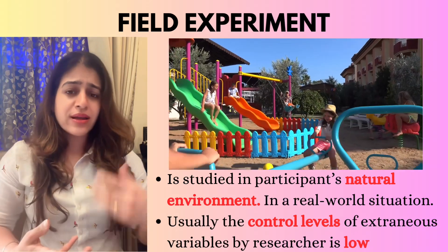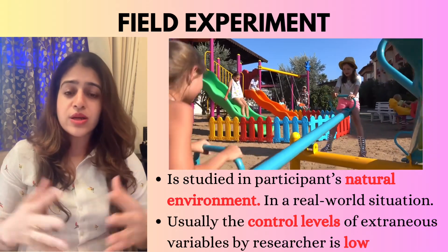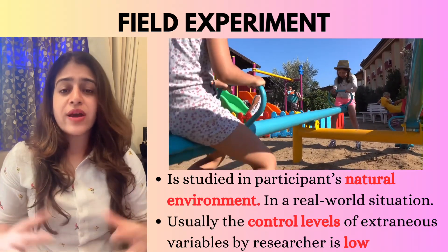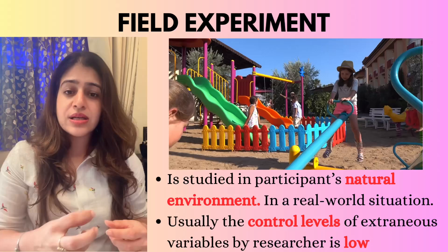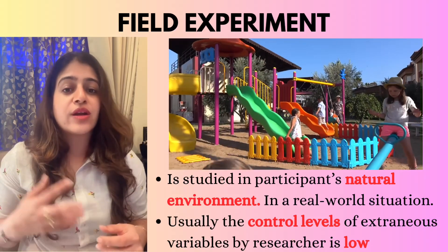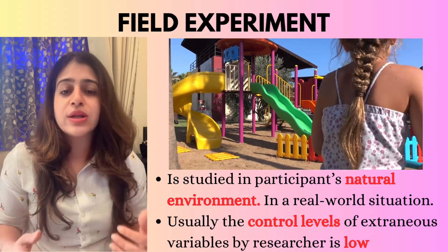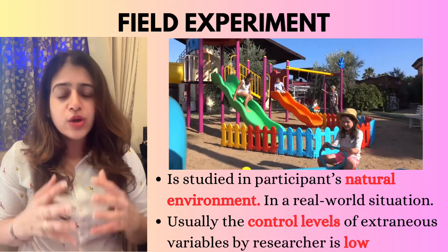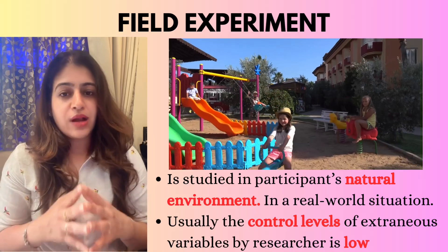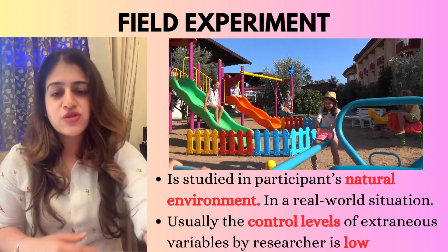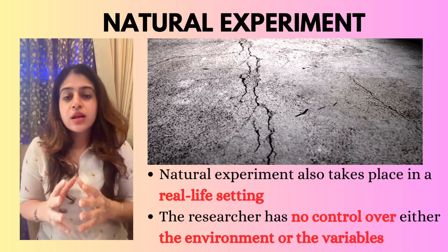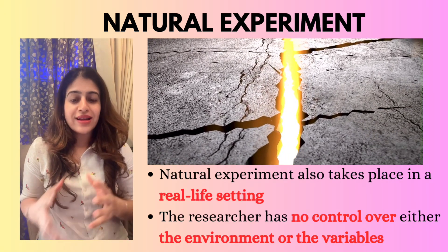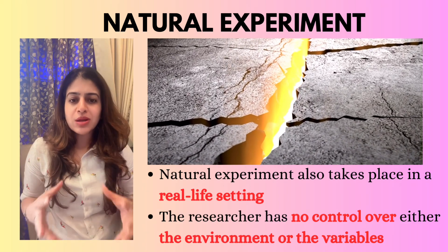The last type is the natural experiment. A natural experiment is set up in a natural, real-world setting — this is a major common feature it shares with the field experiment. The biggest difference between field experiment and natural experiment is that in a field experiment, I as a researcher can control, manipulate, and choose the IV. But in a natural experiment, I cannot manipulate or vary the IV — I can only choose the IV.